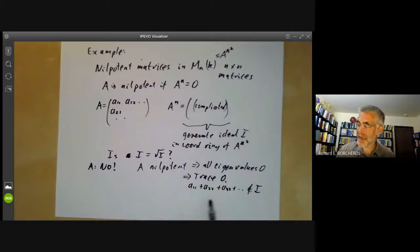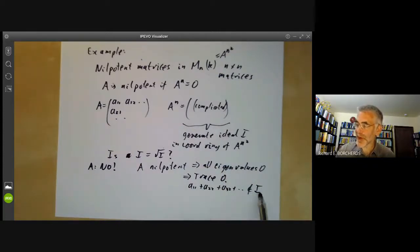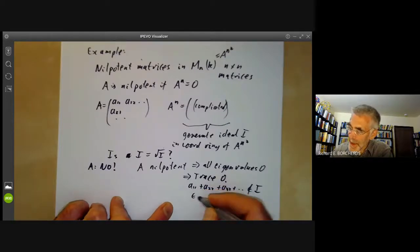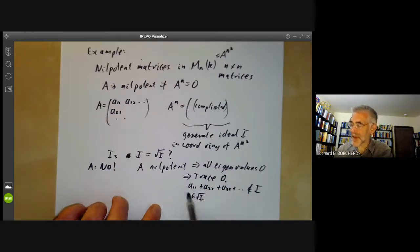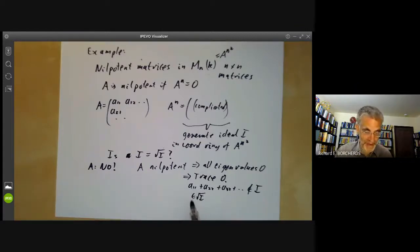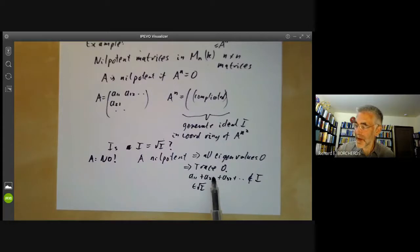Because i is generated by homogeneous polynomials of degree n. So you're not going to get a homogeneous polynomial of degree 1 over that. And not only the trace is... So what am I saying? So this element here is in the radical of i by Hilbert's Nullstellensatz. That's because it vanishes on all nilpotent matrices. And not only the trace vanishes, but the sum of pairs of eigenvalues also vanishes and so on. So there are quite a lot of things in the radical of i that are not in i.